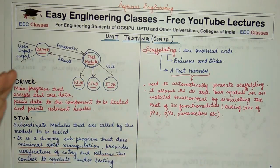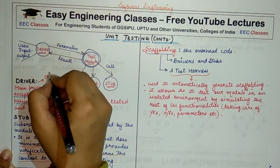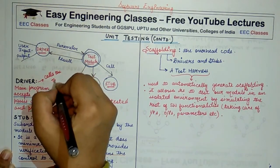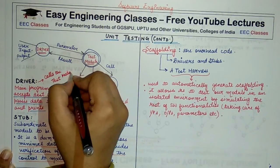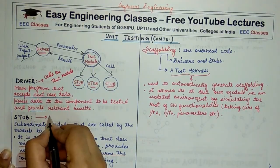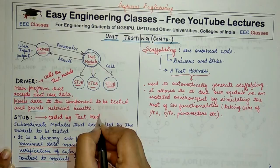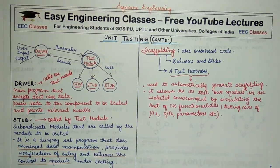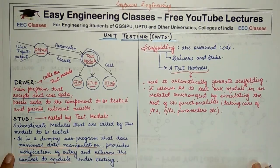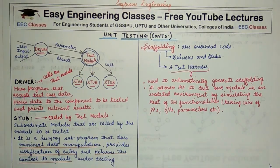Driver and stub are two entities that are very important for unit testing. Driver is the module that calls the test module — remember that. And stub is the module that is called by the test module. Today's lecture focused on understanding driver and stub. I hope you get an understanding of the basic difference between the two terms and how unit testing is actually implemented using both of them. Thank you for watching the video. Stay tuned to easy engineering classes for more lectures on computer science related subjects. Thank you.